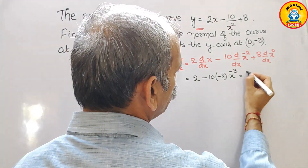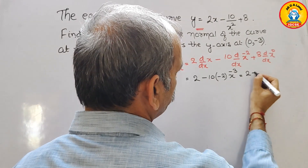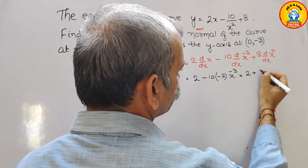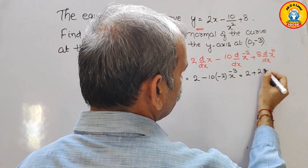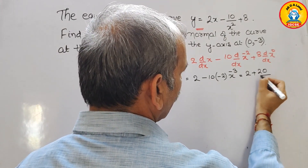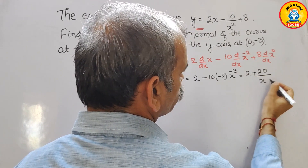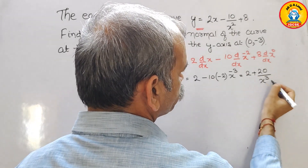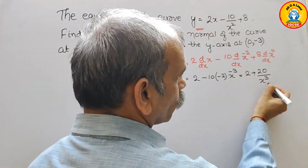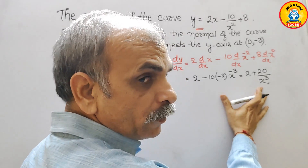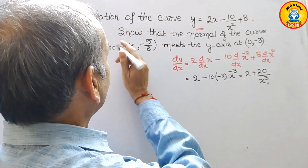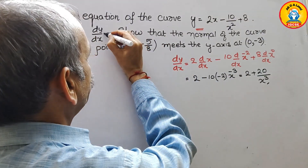So we get our dy by dx equal to 2 plus 20 by x cubed.